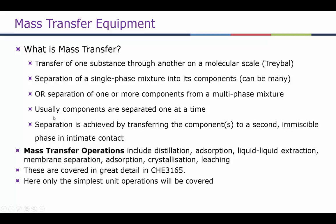Separation can be achieved by transferring components into a second miscible phase through intimate contact. For example, if you have water and acetone mixed together, you can transfer acetone into another liquid solvent like MIBK. MIBK is not soluble in water but acetone is soluble in MIBK, giving a two-phase separation where acetone can be recovered by contacting the two phases in different proportions. Examples of mass transfer operations include distillation, adsorption, liquid-liquid extraction, membrane separation, absorption, crystallization, and leaching.